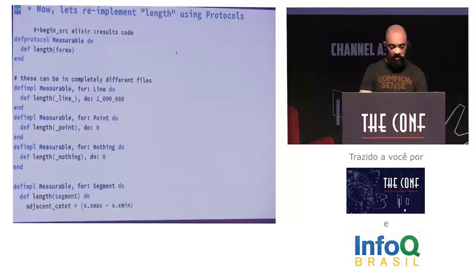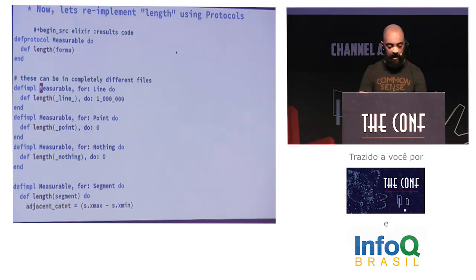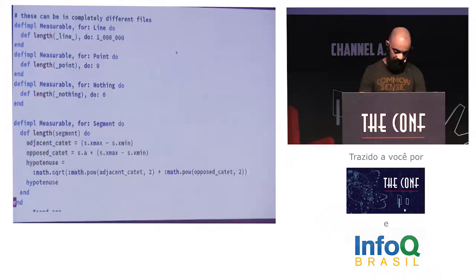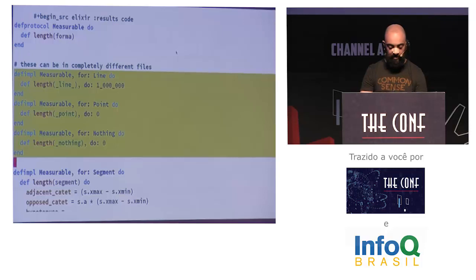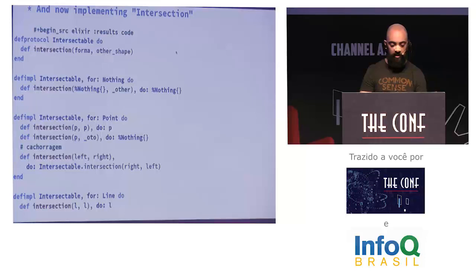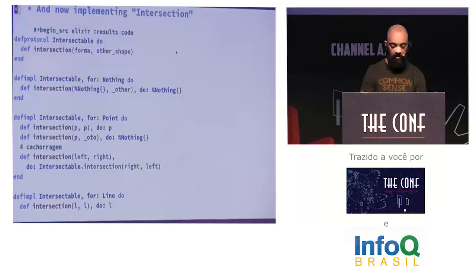Now we're going to reimplement our length feature using protocols. We define a protocol called Measurable and implement it for all the types we're concerned with. For the infinite line, the length is one million — because one million is big enough. The point has no length. Nothing has no length. And the segment has a more complicated implementation of length. All of these can be in completely different files, anywhere in the definition of the system, outside the library. That's how we get that extensibility property. The intersection operation works the same way — you just take the code and move it to the protocol definition.